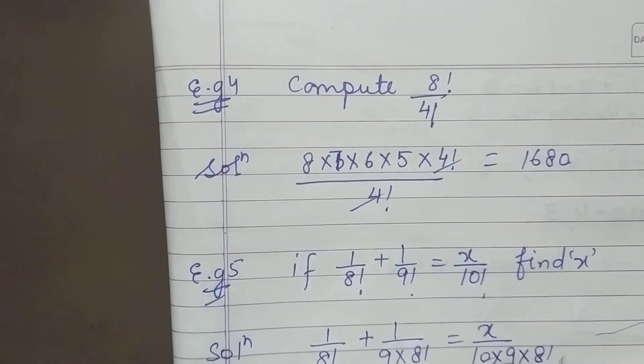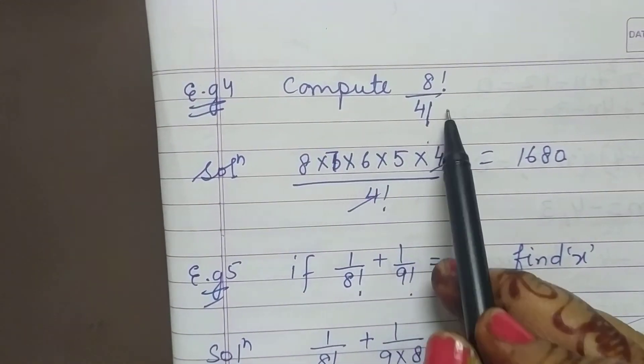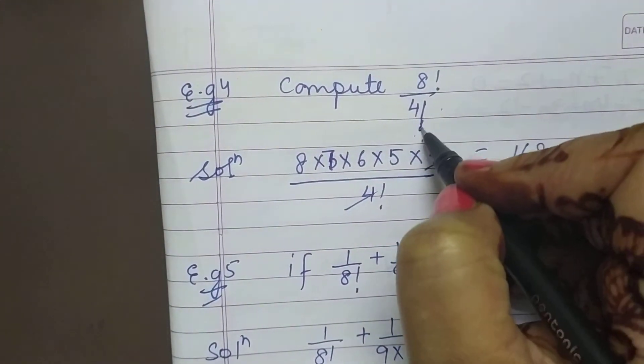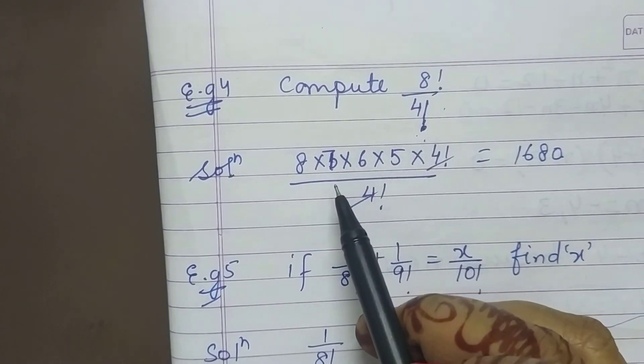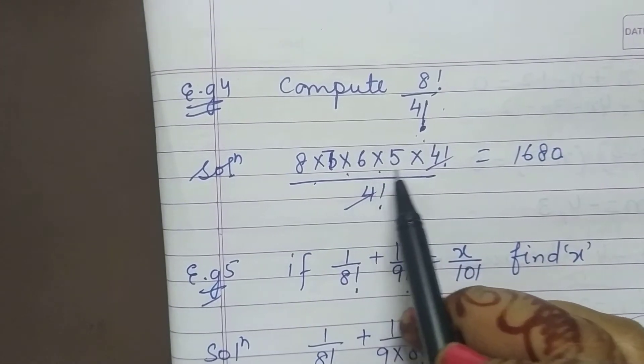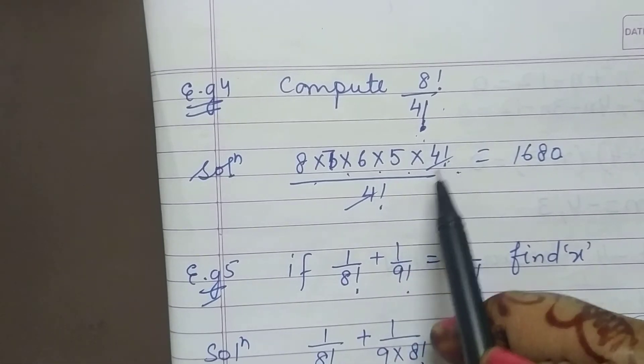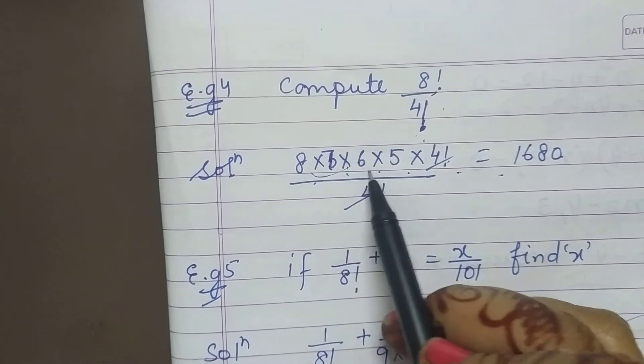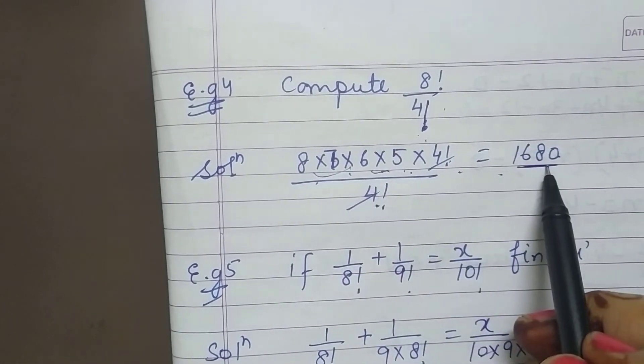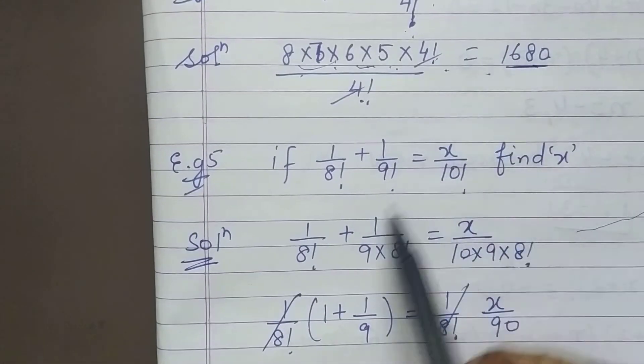Next question. Next is compute 8 factorial divided by 4 factorial. So the larger one is 8. So open it up. 8, 7, 6, 5, 4 factorial. 4 factorial and 4 factorial, what happens? Gets cancelled. So we multiply this. You got the answer 1680.